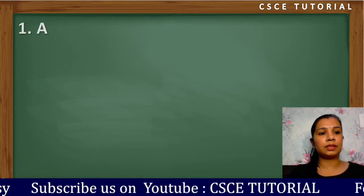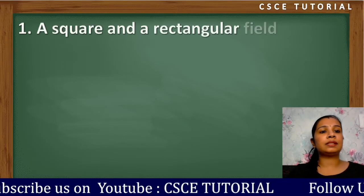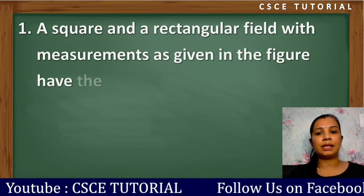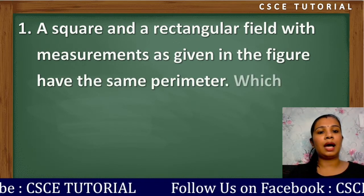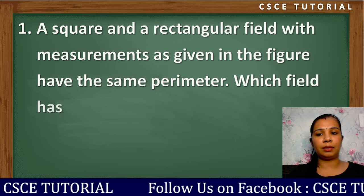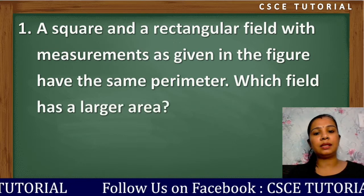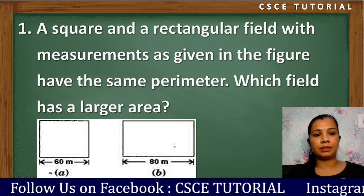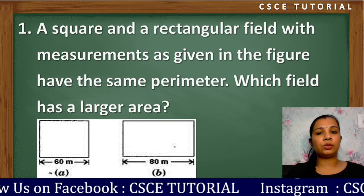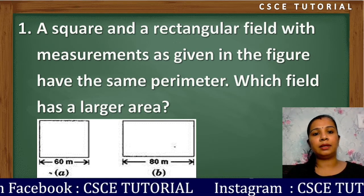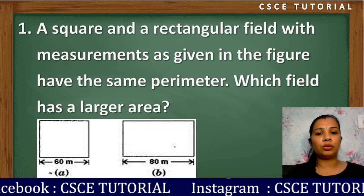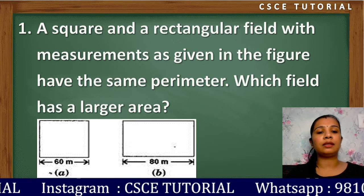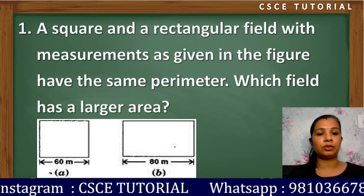The first question of this exercise is: a square and a rectangular field with measurements as given in the figure have the same perimeter. Which field has a larger area? You have two different figures — a square and a rectangular field — with two different measurements. The perimeter is the same, but you need to tell which area is more than the other.